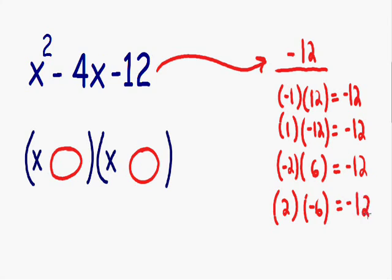And we could keep on going, but I see our two numbers that we need, so I'm going to stop right here. So all these numbers multiply to give us negative 12. But we also need to find the numbers that add or subtract and give us our negative 4.